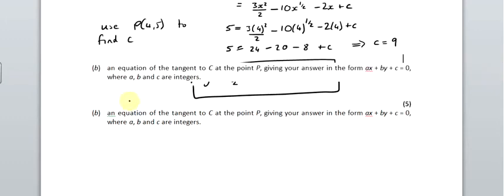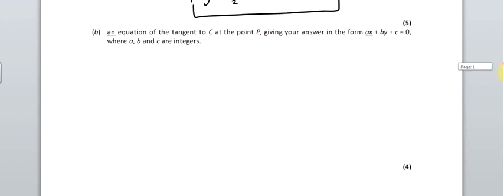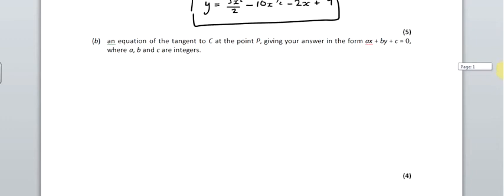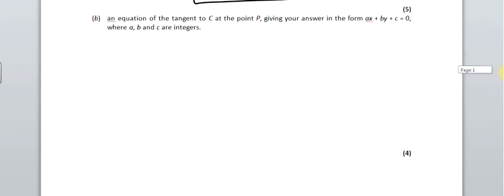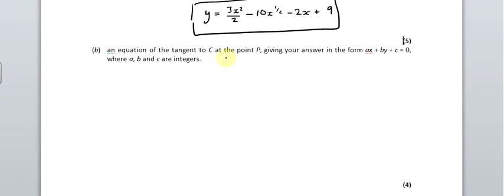Now, part B. We want an equation of the tangent to C at point P, and we've got to give our answer in a particular form. First of all, let's work out the gradient of the curve.